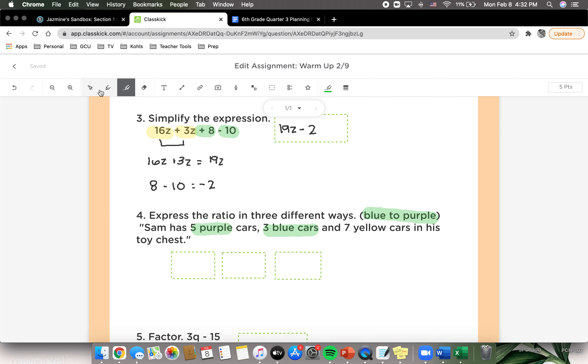So knowing that information, we can write 3 different ratios from blue to purple. So we can write it 3 over 5 as a fraction, or 3 colon 5, or we can write it 3 to 5. All 3 work for a ratio.